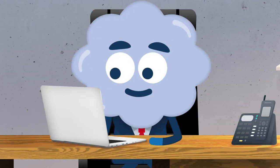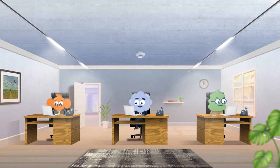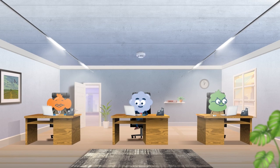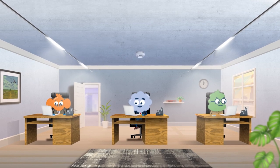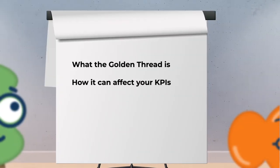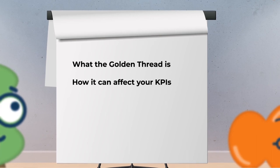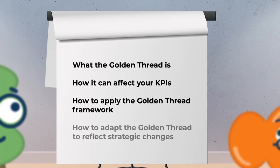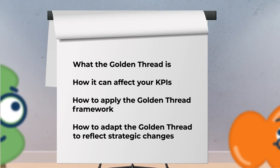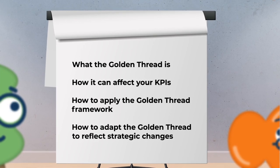Doing so allows you to check your progress effectively, identify areas of improvement, and make data-driven decisions to achieve success. During this course, you'll learn what the Golden Thread is and how it can affect your KPIs. You'll also learn how to apply the Golden Thread framework and how to adapt it to reflect strategic changes within the business that you work for.